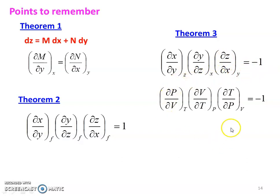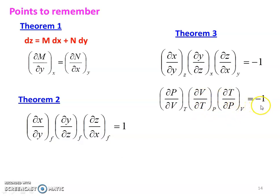Now, thermodynamic basic properties — Pressure, Volume, Temperature — and the three properties used in the equation: dou p by dou v at constant temperature, multiplied by dou v by dou t at constant pressure, multiplied by dou t by dou p at constant volume, equal to minus 1. So in the third theorem — this is the important mathematical theorem — this is the third one we will discuss.